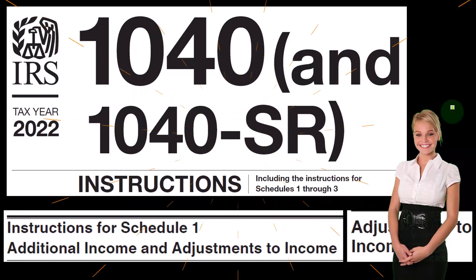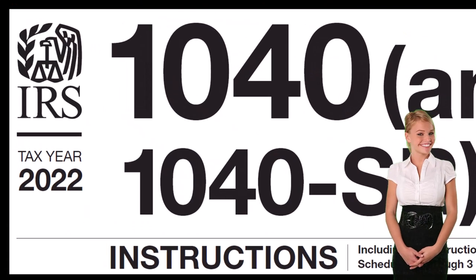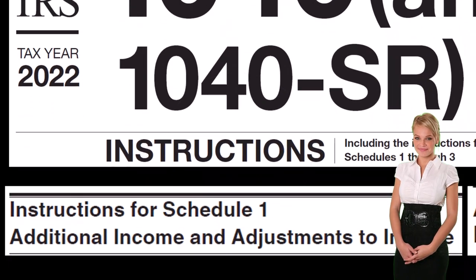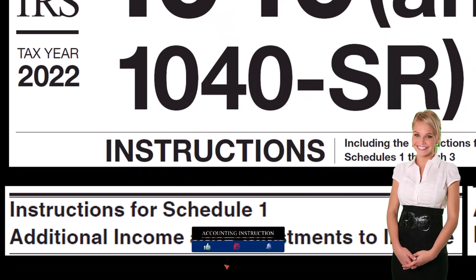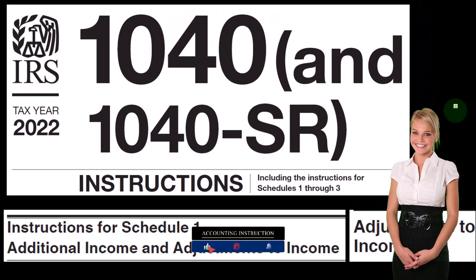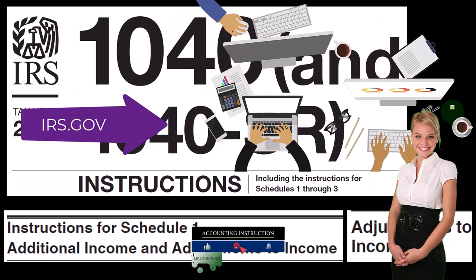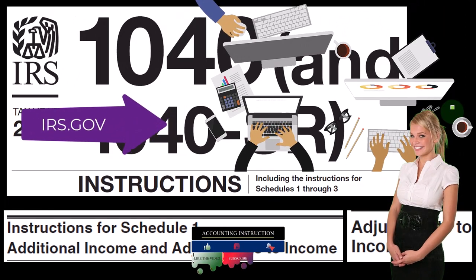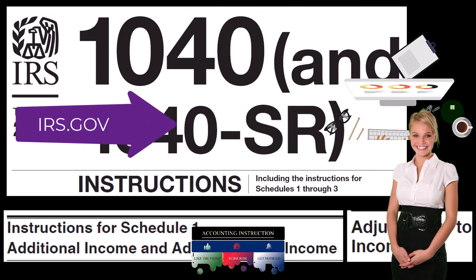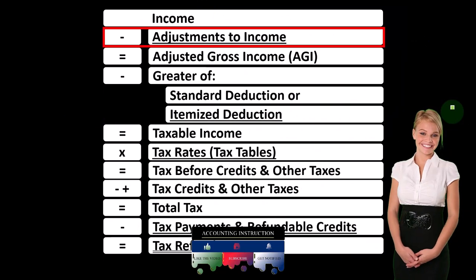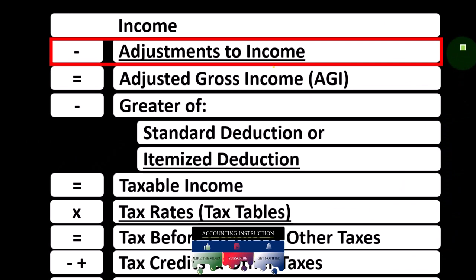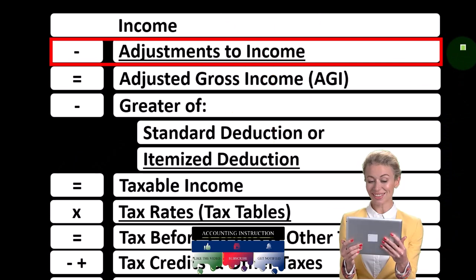Most of this information comes from the Form 1040 Instructions Tax Year 2022, Instructions for Schedule 1, Additional Income and Adjustments to Income. The Adjustments to Income section you can find online at the IRS website, irs.gov. Looking at the income tax formula, we're focused on line two, that being the adjustments to income.